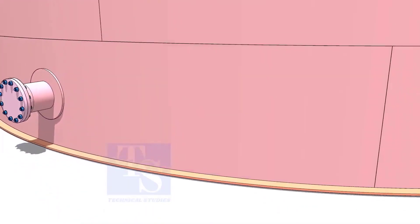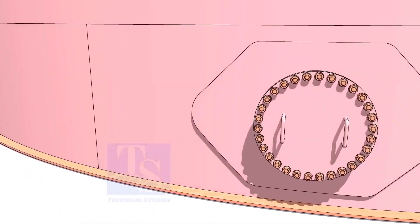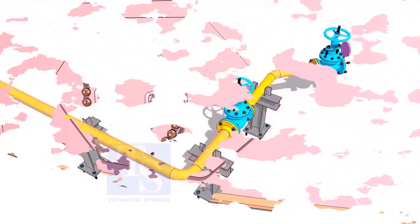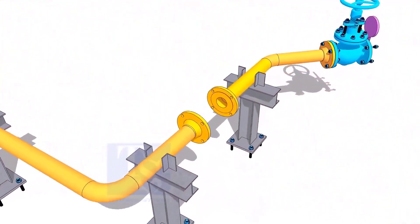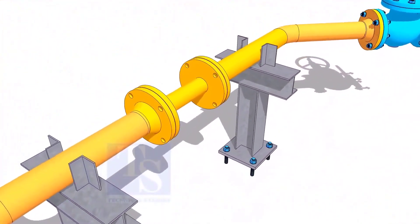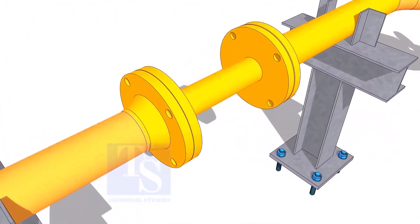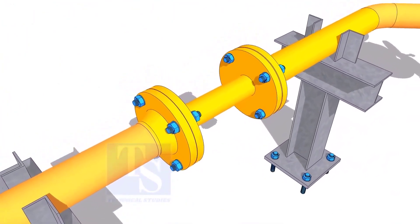Plate flanges are used for low-pressure services or to blind the nozzles of vessels, tanks, etc. for hydrotest purposes. Other uses of plate flanges include making temporary spools to replace valves and equipment on a piping system.